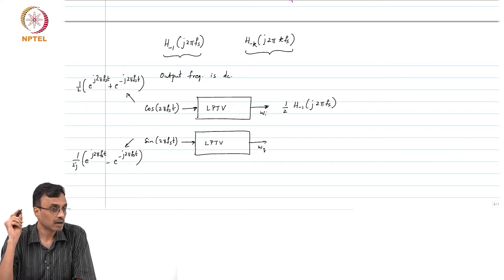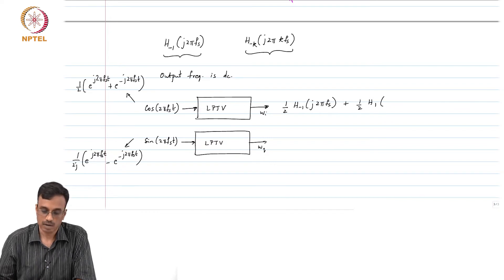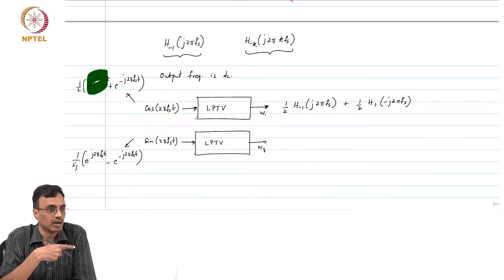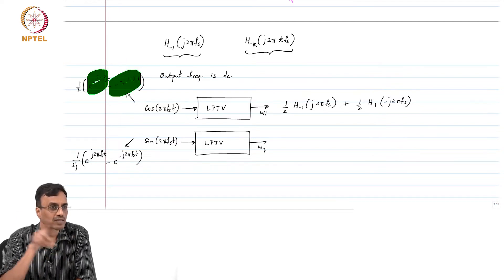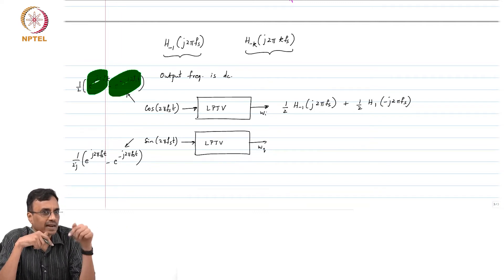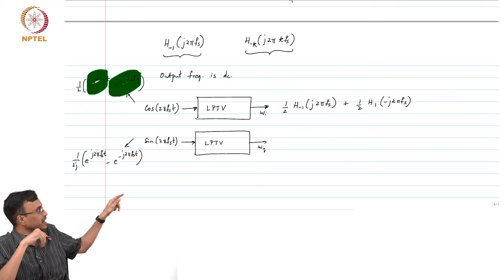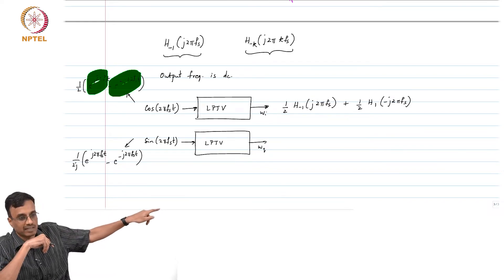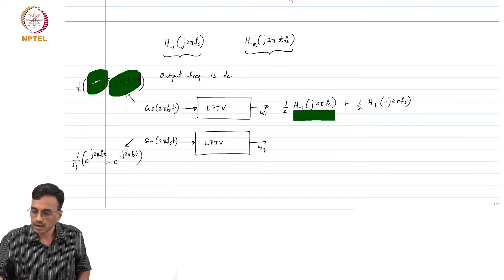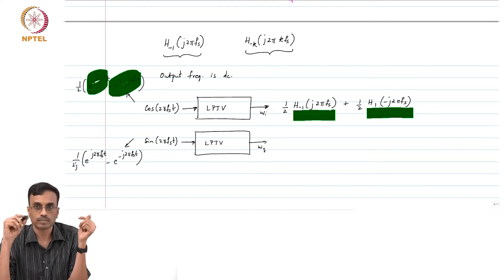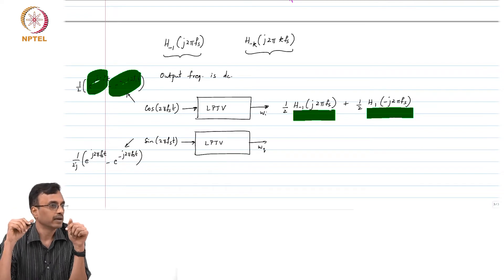...plus half times H_{+1}(−j2πfs). This is because e^{+j2πfs·t} gets translated one fs below to DC through gain H_{-1}(j2πfs), and e^{-j2πfs·t} gets translated by +1 up to DC through H_{+1}(−j2πfs). Multiple input frequencies can translate to the same output frequency in an LPTV system.